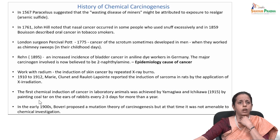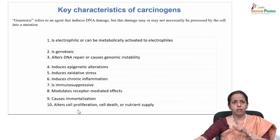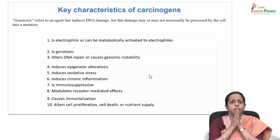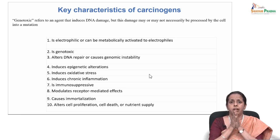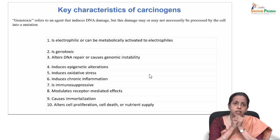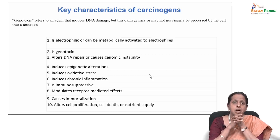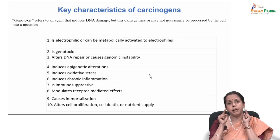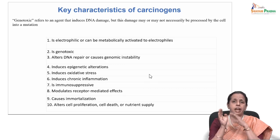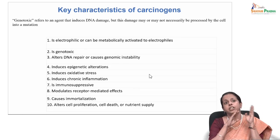So we discussed painting coal tar on rabbit ears, and then further defined what exactly the characteristics of carcinogens are. Now we will look at the key characteristics of a carcinogen. It should be electrophilic or metabolically activated to electrophiles. It should be genotoxic — meaning it is an agent that induces DNA damage, but this damage may or may not necessarily be processed by the cell into a mutation. One of the characteristics of a carcinogen is that it should be genotoxic, but it need not necessarily be genotoxic — even if it is not altering DNA it can still be a carcinogen.